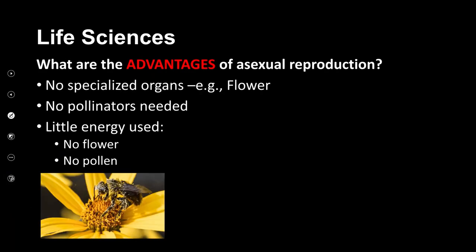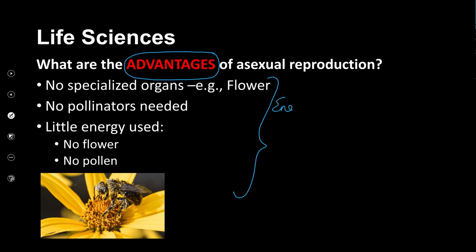We're looking at the advantages — with your farmer's hat on, why would it be an advantage to grow my crops asexually? The advantages of asexual reproduction: they don't have to make a flower. Making a flower takes energy. Also, I don't need pollinators. If I don't have a flower, I don't need bees, butterflies, or birds — I'm taking the middle man out of the equation.